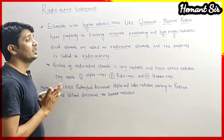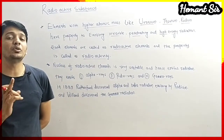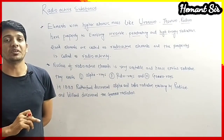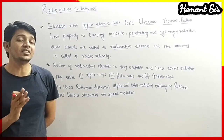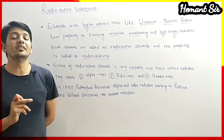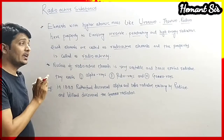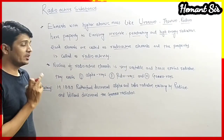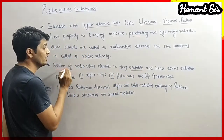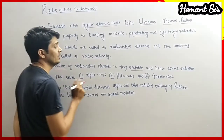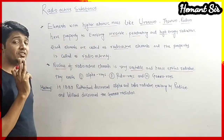Why are these elements emitting such radiation basically? They emit such radiation because their nucleus is very unstable. Due to the unstable nucleus, they release continuously different kinds of radiation. Generally, they release alpha radiation, beta radiation, and gamma radiation. This unstable nucleus is the reason why these elements release radiation.